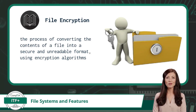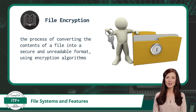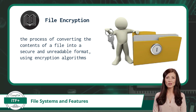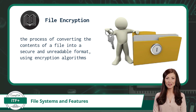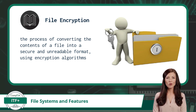Our next file system feature is file encryption — the process of converting the contents of a file into a secure and unreadable format using encryption algorithms. This ensures that only authorized users can access the original content, protecting sensitive information from unauthorized access. For example, if you lost your smartphone or laptop, the right encryption in place would prevent anyone from viewing or reading your data.